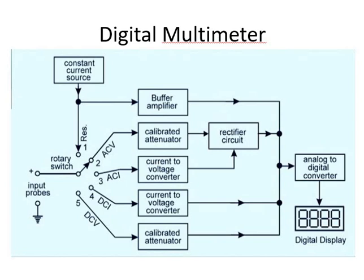At position 5, the rotary switch is in position 5 and the unknown voltage is applied across the input probes. It is attenuated and directly given to the analog-to-digital converter without rectification, and the ADC displays its value on the digital display. In this fashion, all 5 positions are covered by means of the buffer amplifier, attenuator, and current-to-voltage converters. For some positions the rectifier circuit is required; all signals are finally provided to the ADC and then to the digital display.